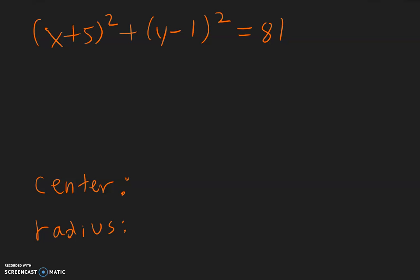Finding the center is very easy. When you look at this, you see x plus 5. Now change the sign. This positive 5 means a negative 5, so the x coordinate will be negative 5.